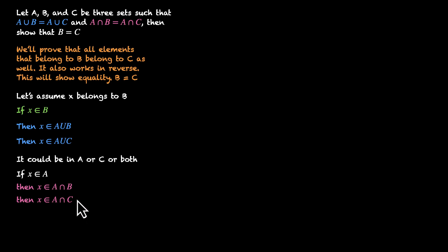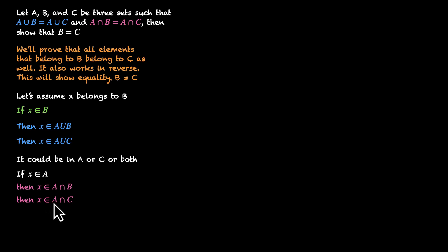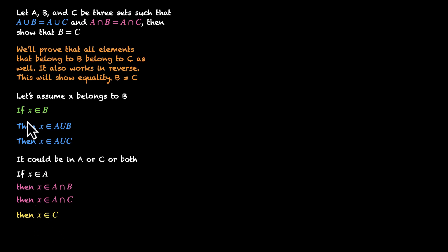Let's see what we have: x belongs to A and x belongs to A intersection C. Since x is inside A intersection C, x has to be in C as well. So we have proved that if x belongs to B and x belongs to A, then x belongs to C.